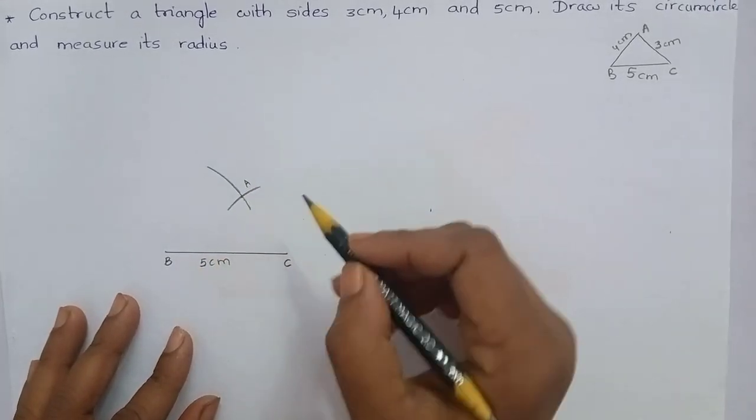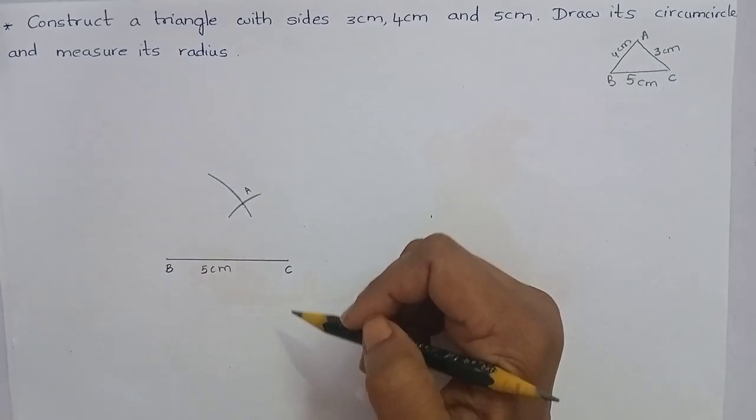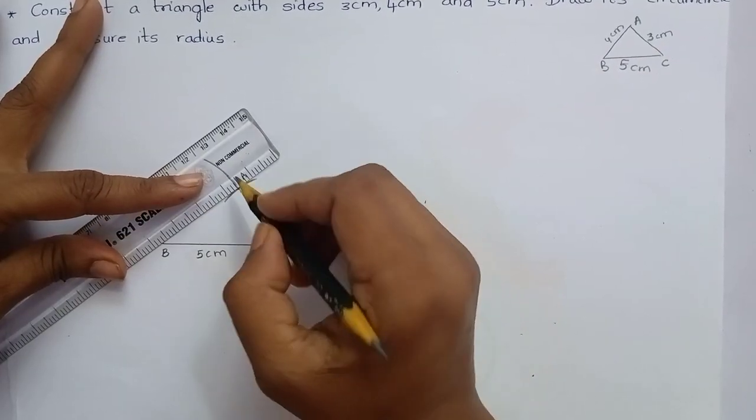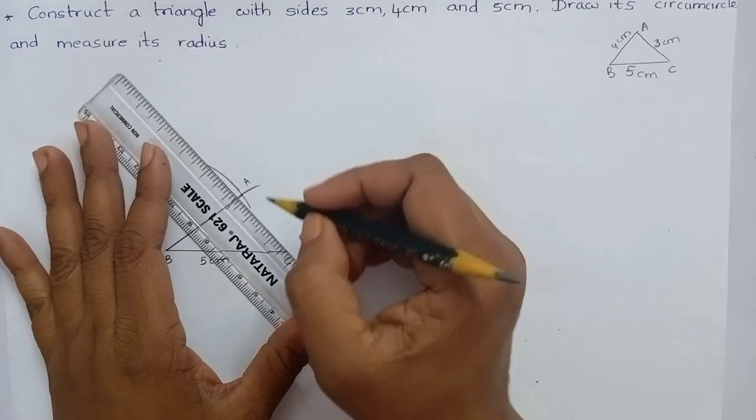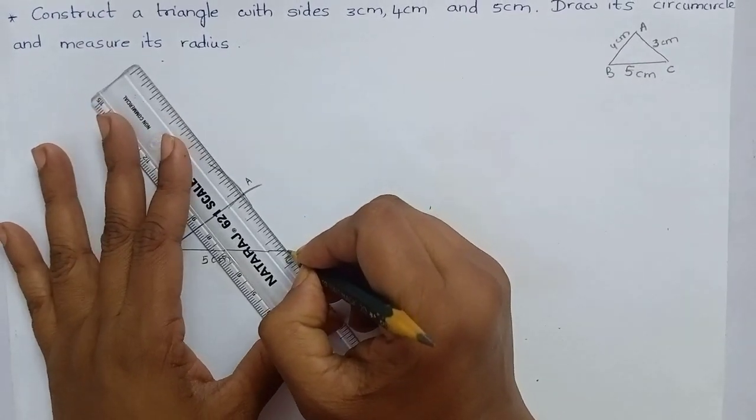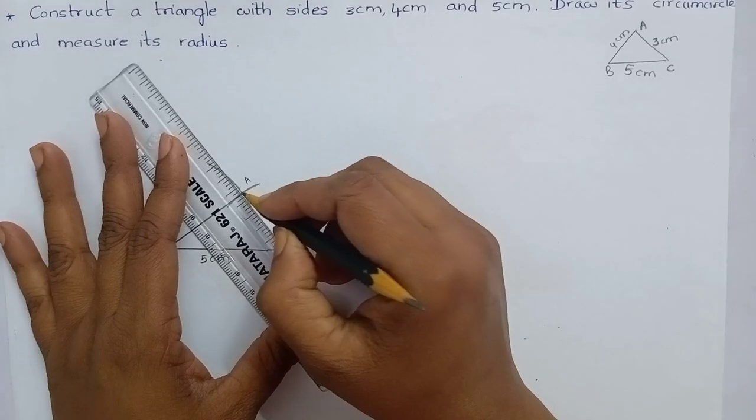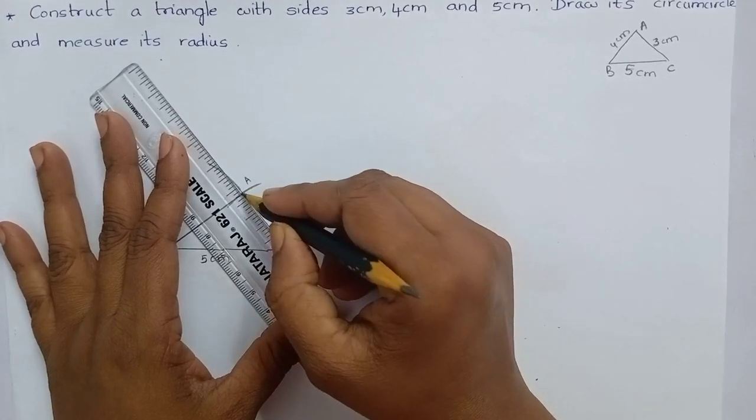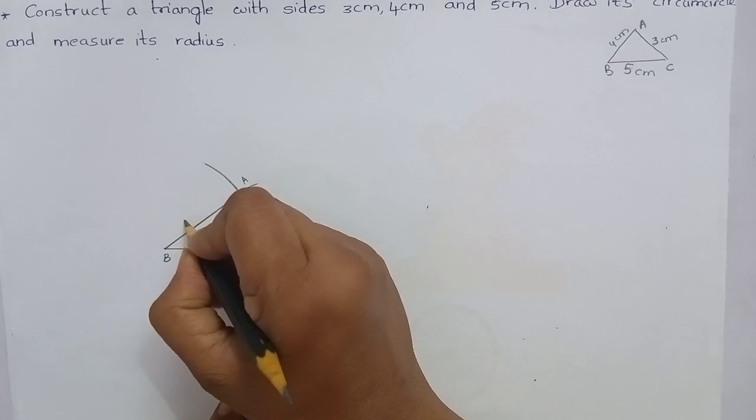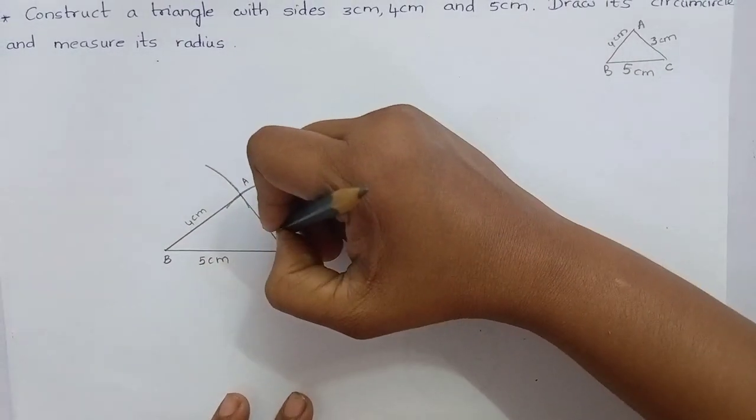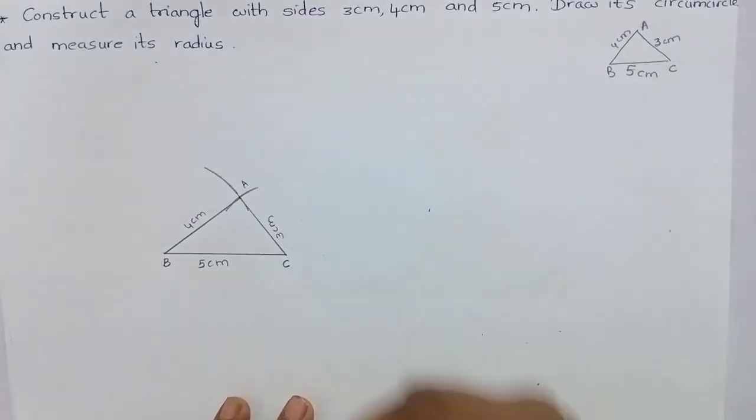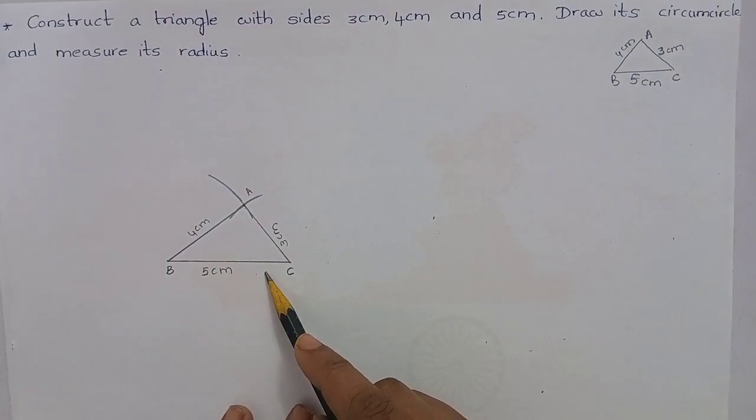Join AB and AC. AB is 4 cm and AC is 3 cm. We have constructed a triangle.